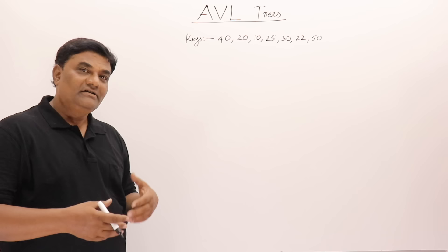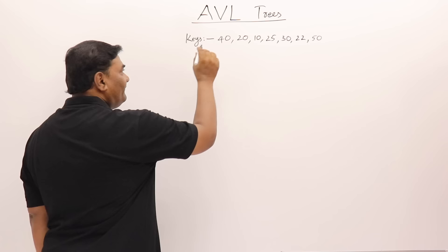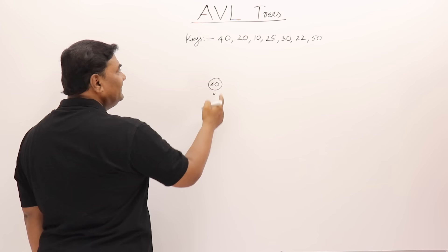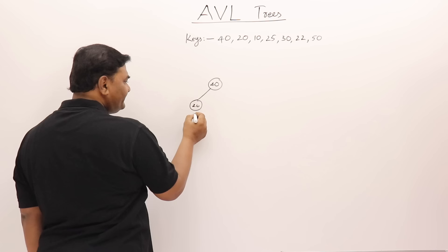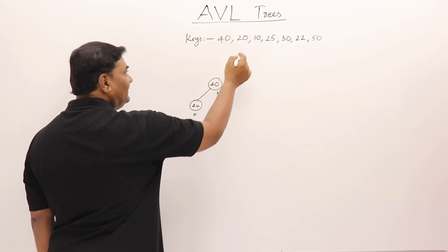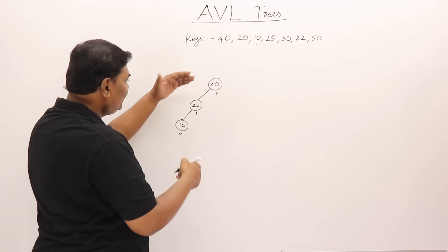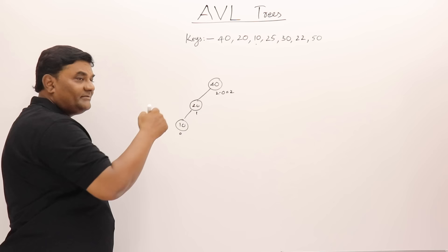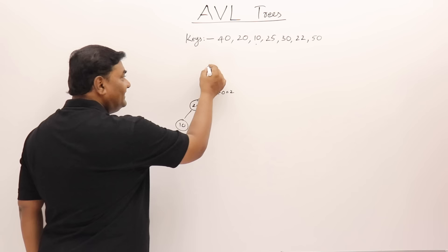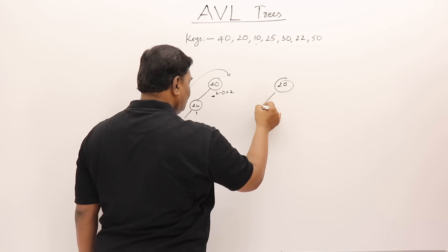Now creating an AVL tree by inserting keys one by one. Insert 40 — single node, balanced. Insert 20 — goes left, balanced. Insert 10 — goes left of 20. Now node 40 has balance factor 2 — LL imbalance. Perform LL rotation: 20 moves up as root, 10 on left, 40 on right. All balance factors become zero.